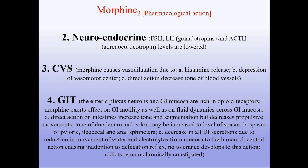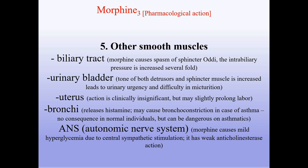Other smooth muscles: Biliary tract — morphine causes spasm of the sphincter of Oddi; intrabiliary pressure is increased several fold. Urinary bladder — tone of both detrusor and sphincter muscle is increased, leading to urinary urgency and difficulty in micturition. Uterus — action is clinically insignificant but may slightly prolong labor. Bronchi — morphine releases histamine and may cause bronchoconstriction in asthma; dangerous in asthmatics. Autonomic nervous system — morphine causes mild hyperglycemia due to central sympathetic stimulation and has weak anti-cholinesterase action.